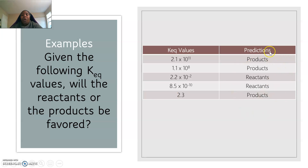I wrote down all the answers so you guys will have them. The first favors the products — really, really large, over 1. The second also favors the products — really, really large, over 1. Examples three and four were at minus 2 and minus 10 — really, really small numbers, because you're moving the decimal point back. And for the last one, you could say products since it's greater than 1, but I'd also accept 'neither.'